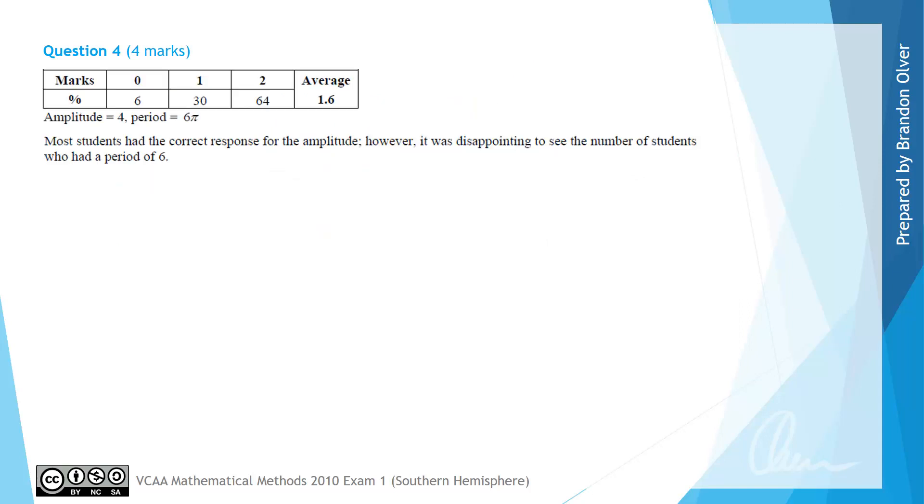So from the examiner's report, we can see that most students gave the correct response for the amplitude. However, it was disappointing to see the number of students who had the incorrect period, a common mistake being 6 rather than 6 pi. So it's really important that you know how to calculate the period for a sine, cosine, or even a tangent graph.